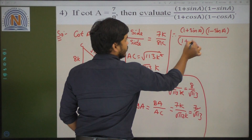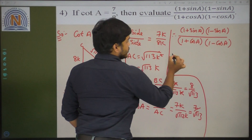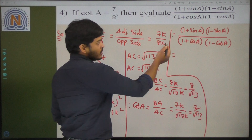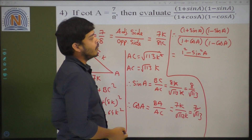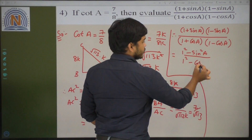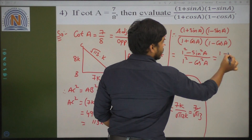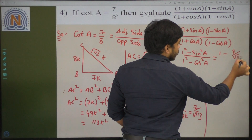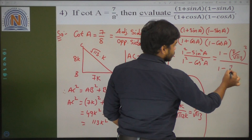Now we need to calculate 1 plus sin A into 1 minus sin A, divided by 1 plus cos A into 1 minus cos A. See children, 1 plus sin A into 1 minus sin A is the form A plus B into A minus B equals A squared minus B squared. That is 1 squared minus sin squared A, divided by 1 squared minus cos squared A. Substituting: 1 minus sin squared — sin value is 8 by root 113, whole squared — divided by 1 minus cos squared — cos value is 7 by root 113, whole squared.